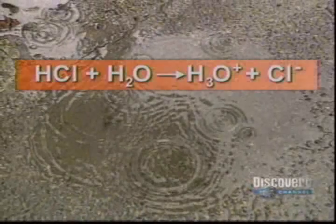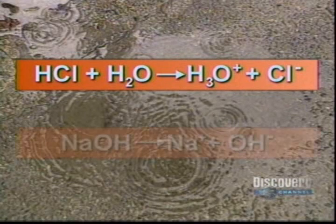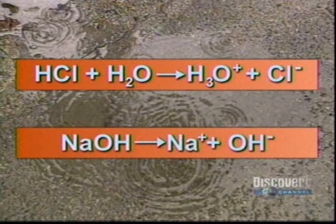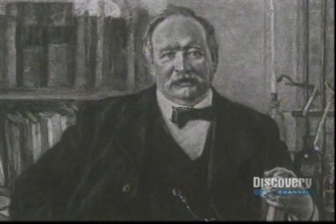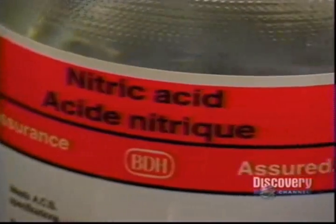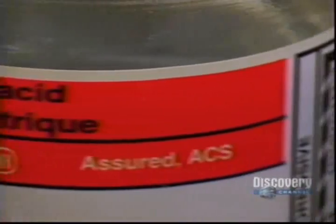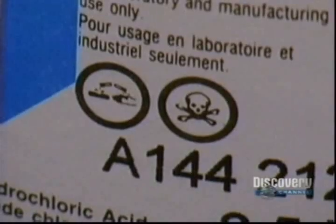For example, hydrochloric acid combines with water to form individual hydronium and chloride ions, and sodium hydroxide dissociates into separate sodium and hydroxide ions. Based on his findings, Arrhenius defined an acid as any substance that forms hydronium ions in solution, and a base as any substance that releases hydroxide ions.